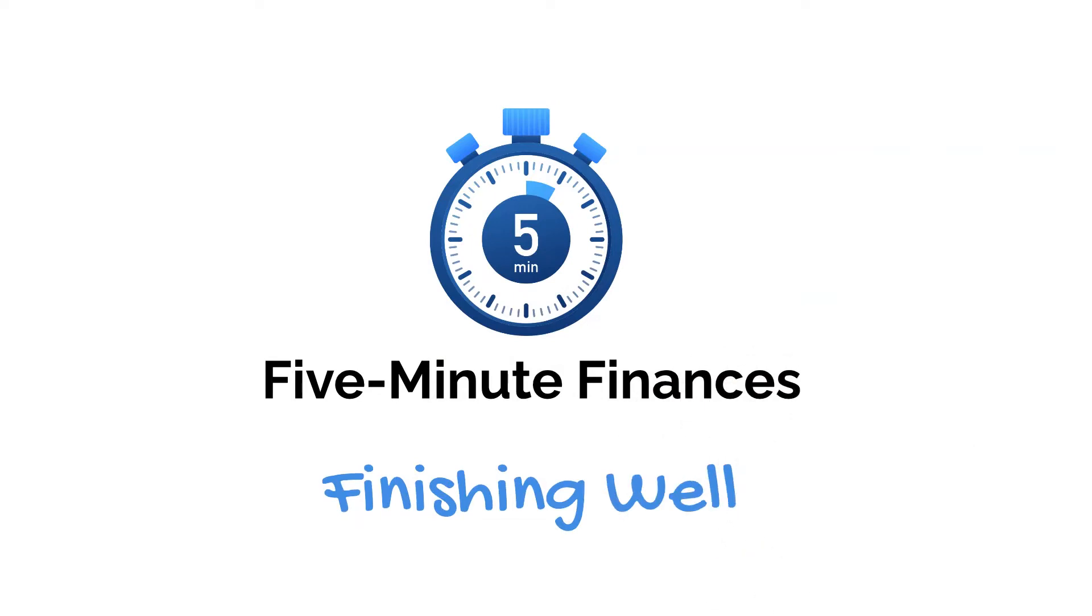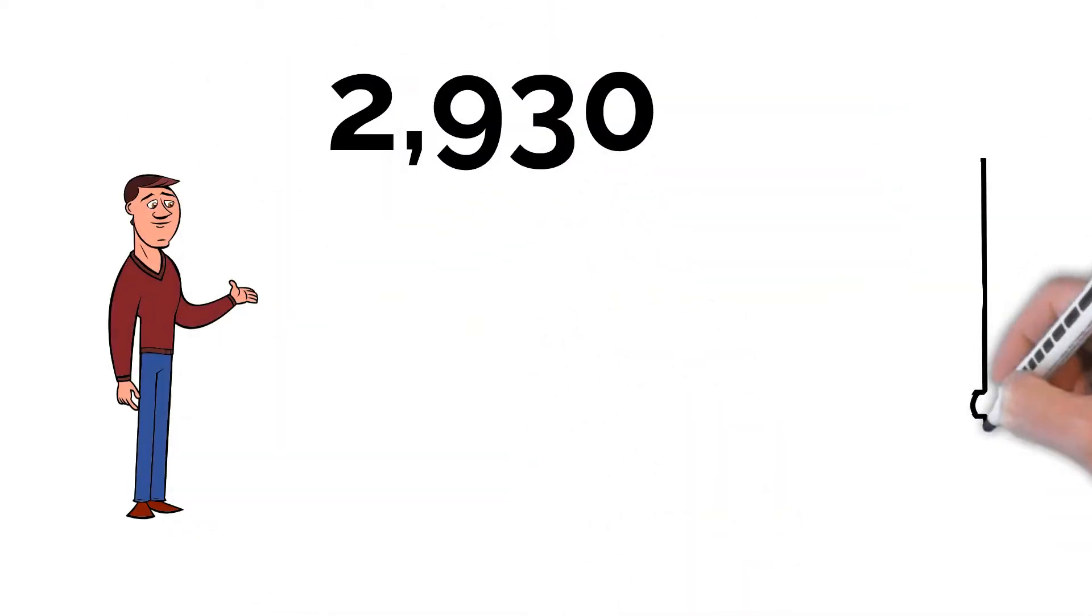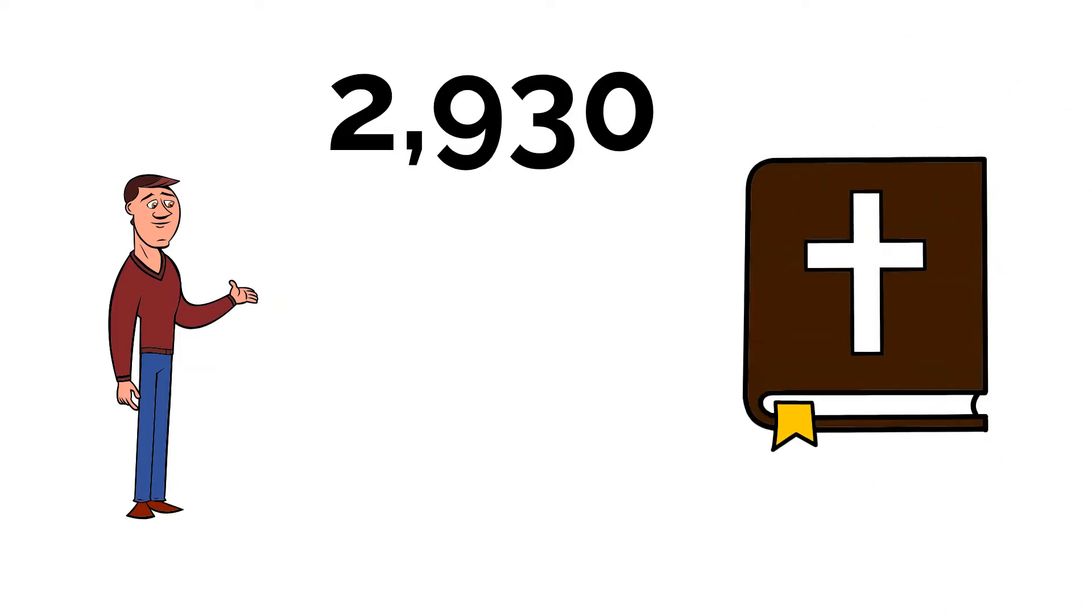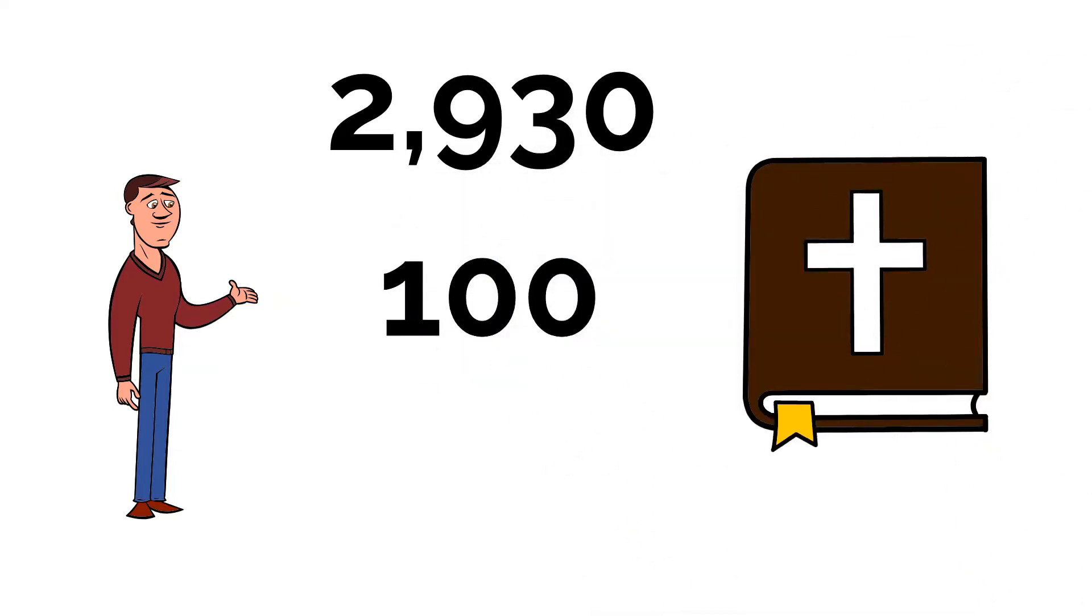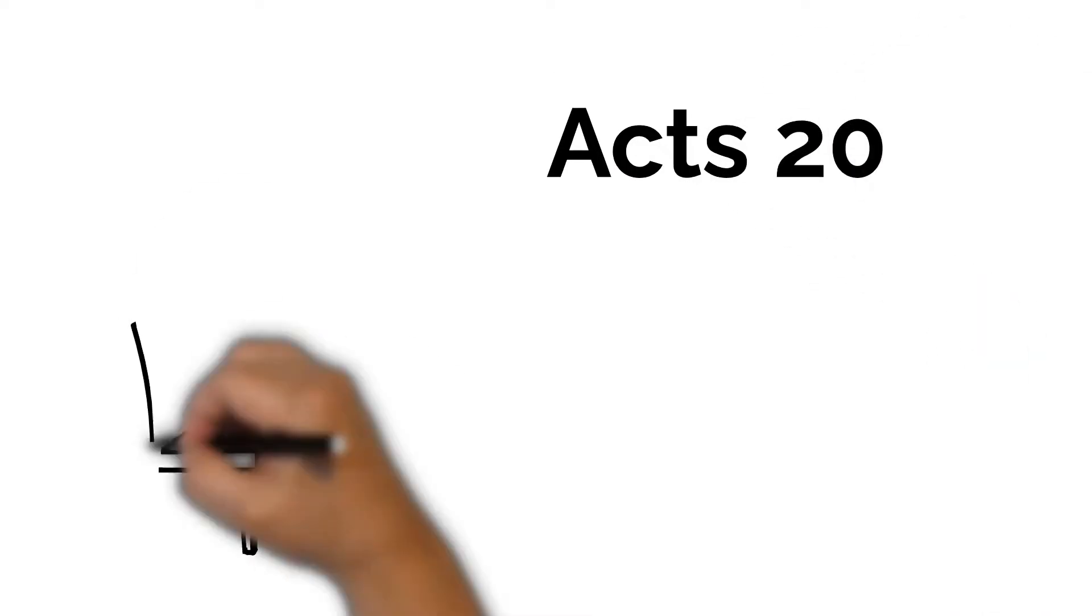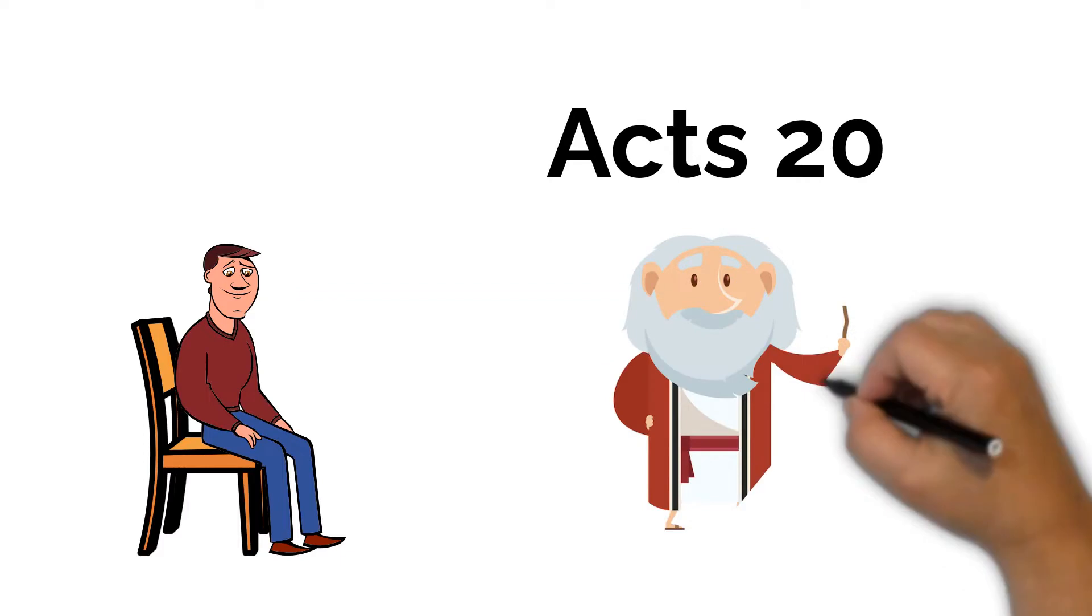Finishing well can be a real challenge. Of the 2,930 people mentioned in the Bible, we know significant details of only about 100 people. And of those 100, only about 30 of them finished well. In Acts 20, we get a front row seat to one of those 30 who did finish well: Paul.